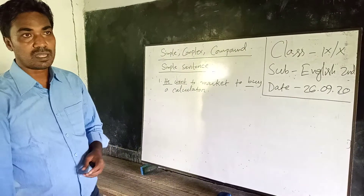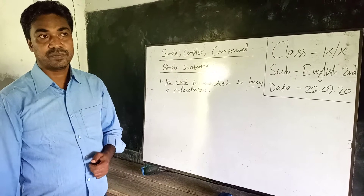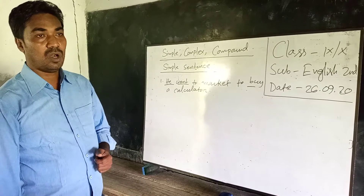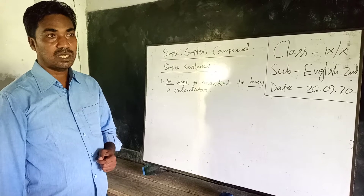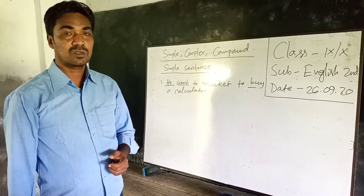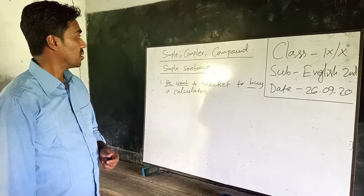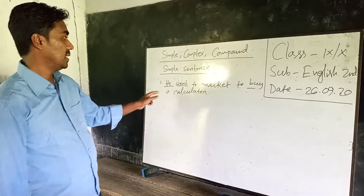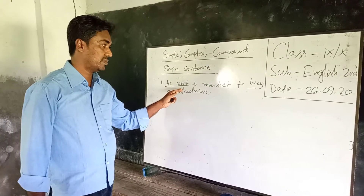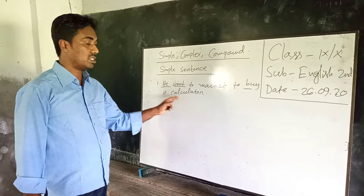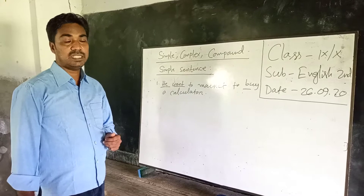Next comes the complex sentence. A complex sentence consists of one independent clause and one or more subordinate clauses. In a complex sentence, we find two subjects, two finite verbs, and two clauses. One clause is an independent clause and the other clause is a dependent clause.